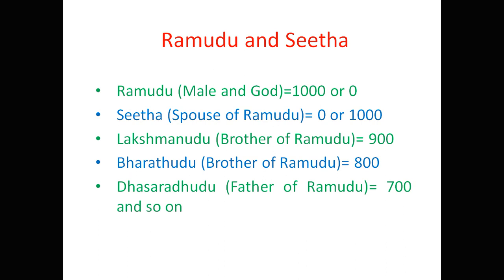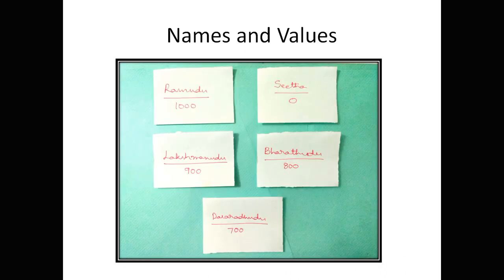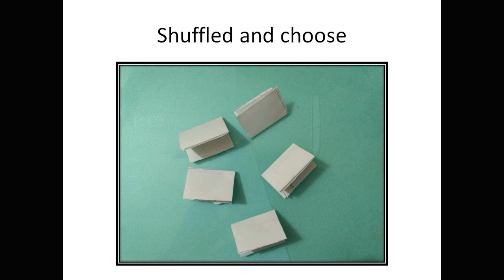First, we need to take the paper, cut it into small pieces, and write the names and values like this. After this, we need to fold them in a unique fashion such that there is no identification for any of them, so that once you fold and shuffle them, everyone has to choose one piece. They can open the sheet and see the paper.